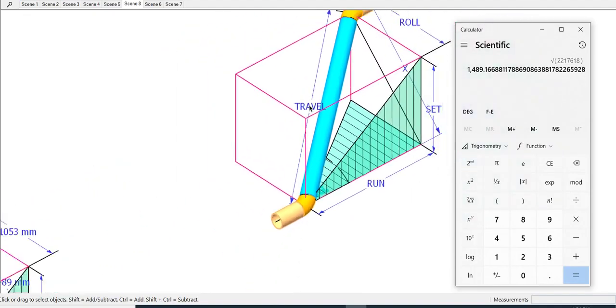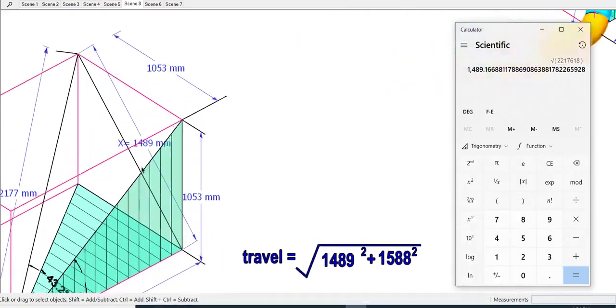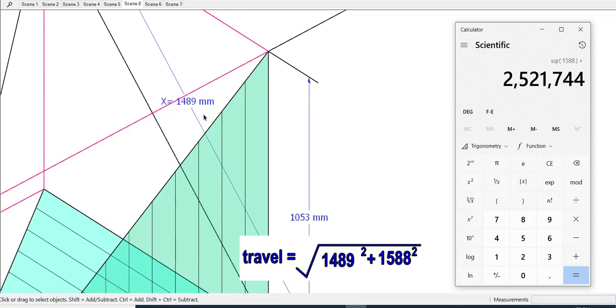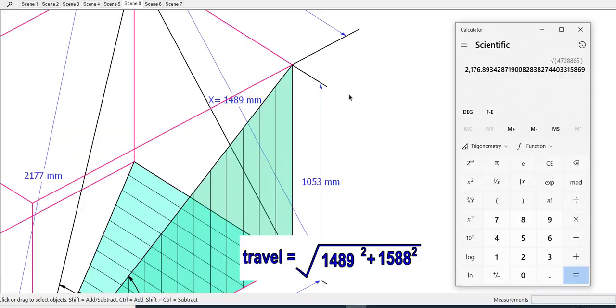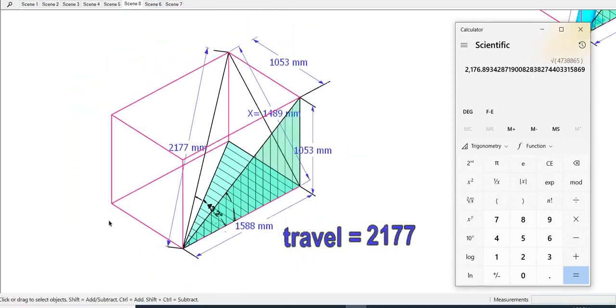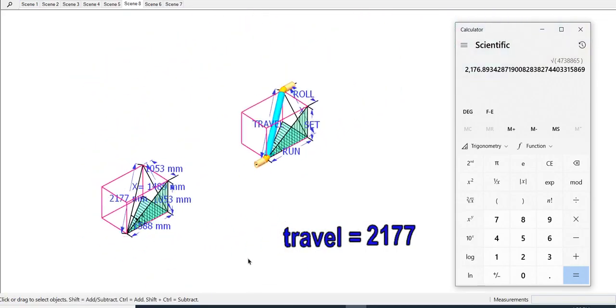Now calculate the value of the travel. The method is almost the same. Travel equals the root of the sum of the square roots of X and the run. So the value of travel is 2177 millimeters.